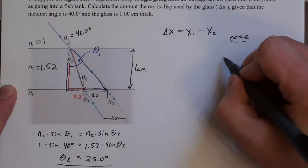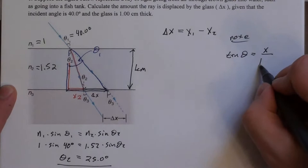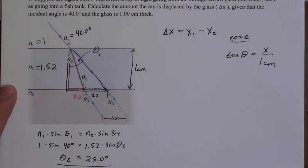So notice that tangent of theta is the opposite, so it's x over adjacent, so it's 1 centimeter. And this is true for each of them, theta 1 x1 and theta 2 x2. So now I can plug that into this equation.